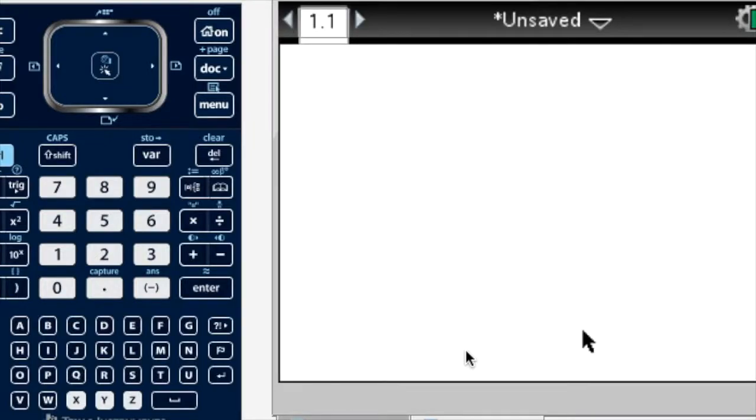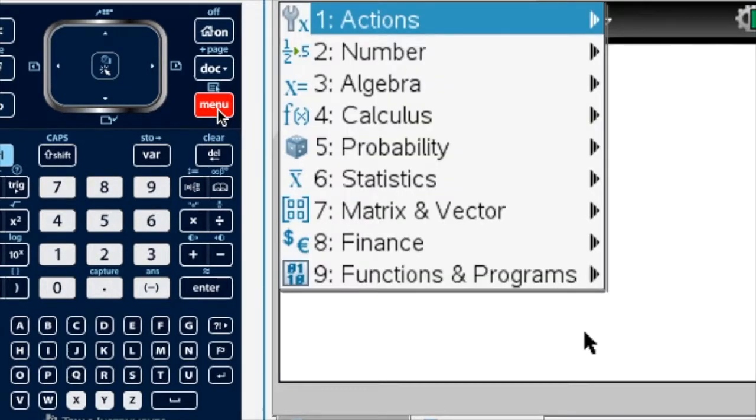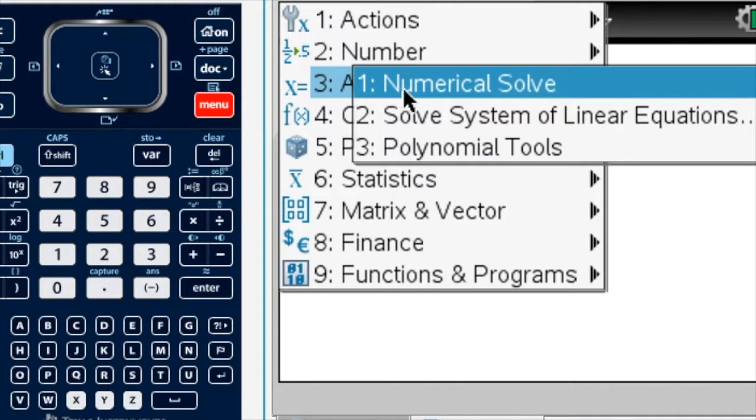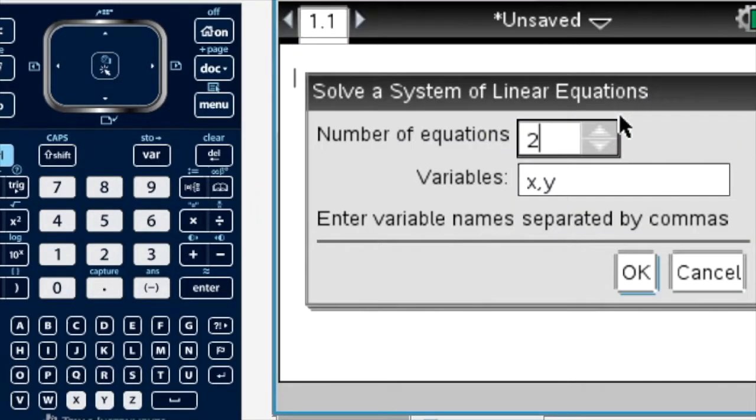To solve simultaneous equations, we can press Menu, Algebra, and then Solve System of Linear Equations. In our example, we just have two equations and our variables are x and y. Sometimes you might need to change these.